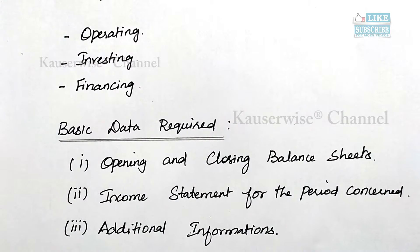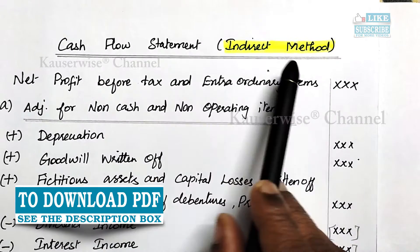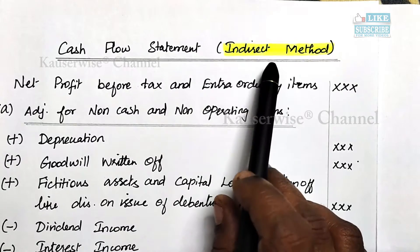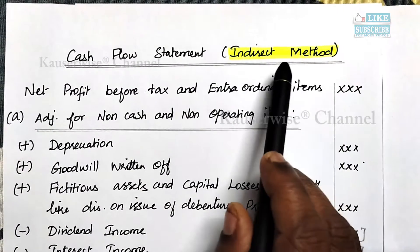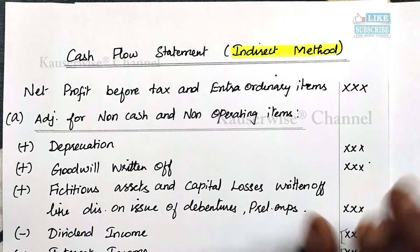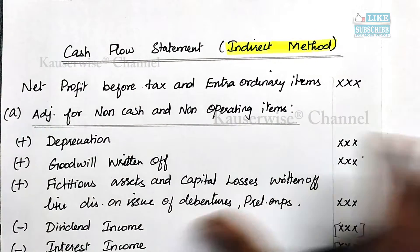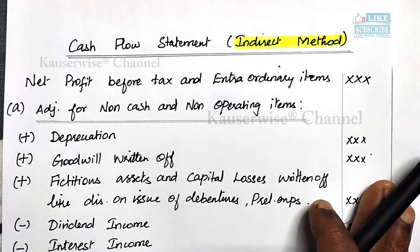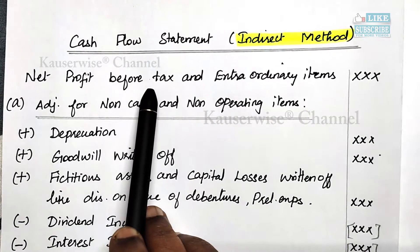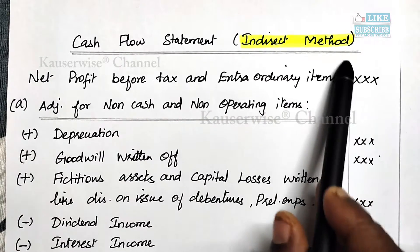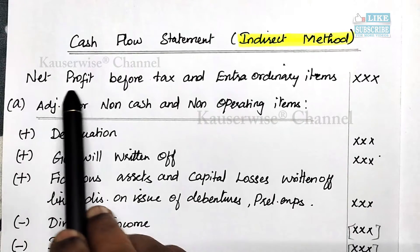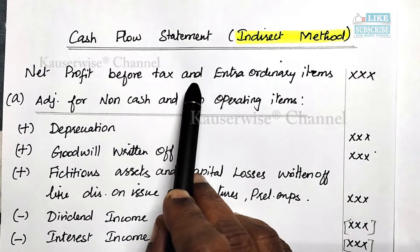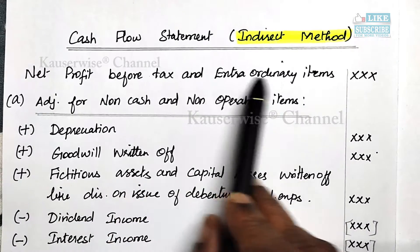Now let us see the format of cash flow statement — the indirect method. There are 2 different methods: the first one is direct method and the other is indirect method. From an exam point of view, you can follow the indirect method unless there is a specific instruction to prepare the direct method. The starting point under the indirect method is net profit before tax and extraordinary items. I will tell you how to calculate net profit before tax and extraordinary items in the next video.